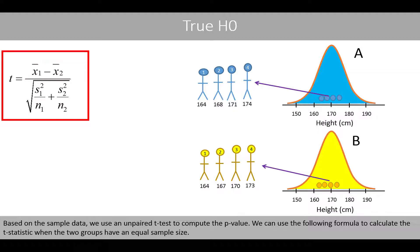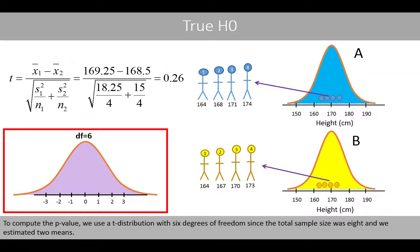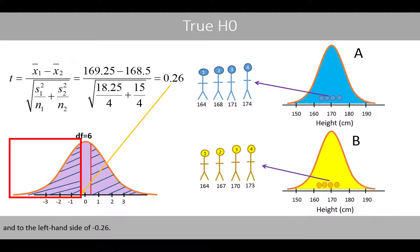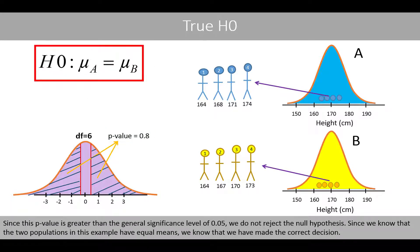We can use the following formula to calculate the t-statistic when the two groups have an equal sample size. We see that the t-statistic is equal to about 0.26. To compute the p-value, we use a t-distribution with 6 degrees of freedom since the total sample size was 8, and we estimate the two means. The p-value for a two-sided test corresponds to the area to the right-hand side of 0.26 and to the left-hand side of negative 0.26. By using software, we can calculate the area of these two tails to about 0.8, which represents our p-value. Since this p-value is greater than the general significance level of 0.05, we do not reject the null hypothesis. Since we know that the two populations in this example have equal means, we know that we have made the correct decision.